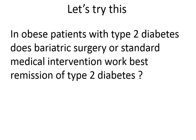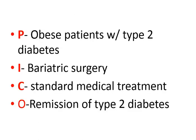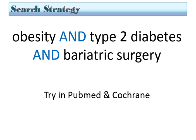You can try this search yourself: In obese patients with type 2 diabetes, does bariatric surgery or standard medical intervention work best for remission of type 2 diabetes? The P is obese patients with type 2 diabetes, I is bariatric surgery, C is standard medical treatment, and O is remission of type 2 diabetes. As with the previous search, you don't need to include the outcome or comparison initially — just start with the core concepts. Try typing obesity AND type 2 diabetes AND bariatric surgery and see what results you get.